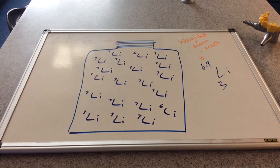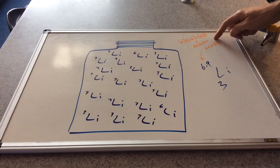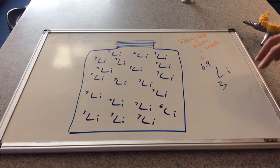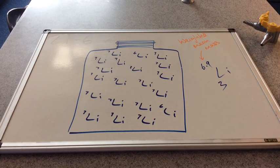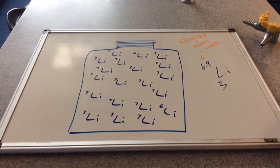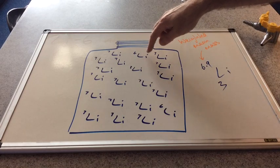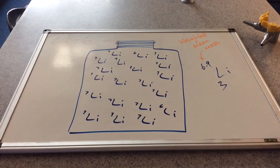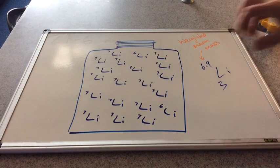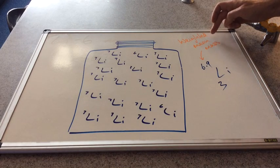In mathematical terms, this 6.9 is what's known as a weighted mean. So it's kind of an average mass. Taking into account the mass of the isotopes and then factoring in the proportion of each type, so how many are mass 6, how many are mass 7, what's that going to give us as a sort of average mass? But we call it the weighted mean mass.